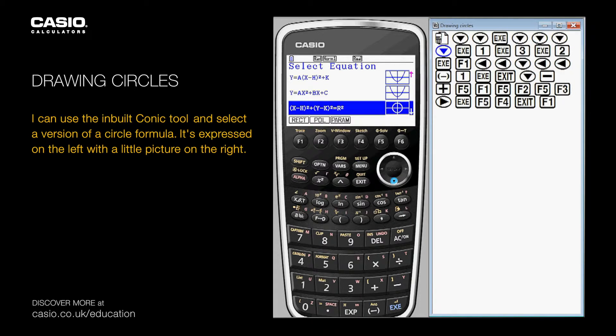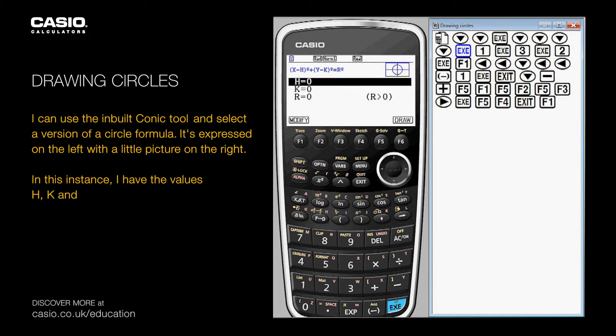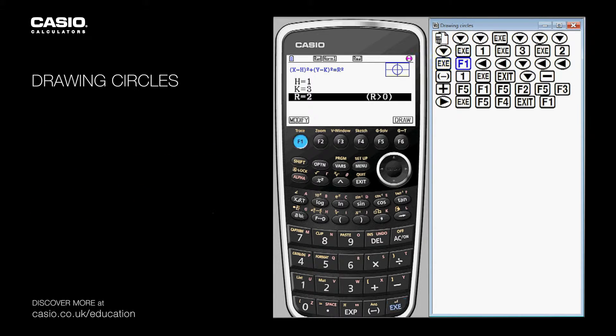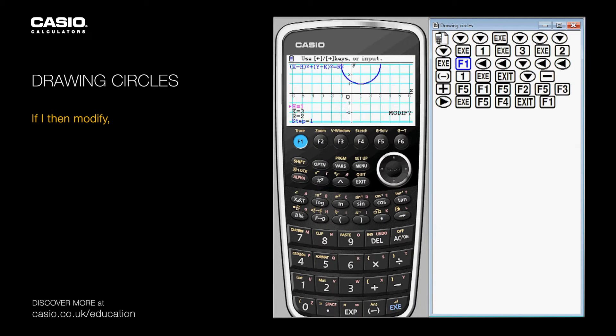In this instance I have the values h, k, and r as my variables. I can choose any values I want for those. If I then modify, it will draw a picture using those values, but I can change them.